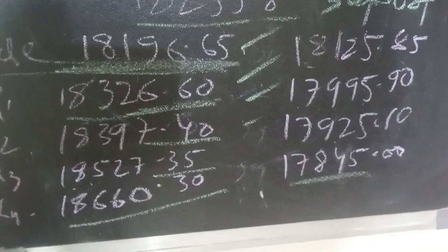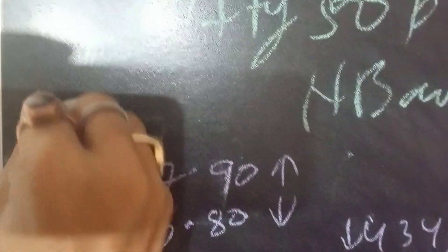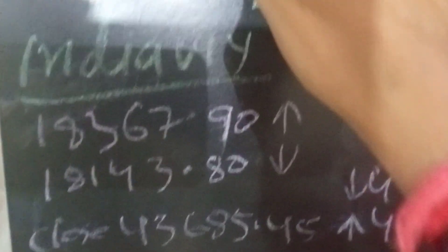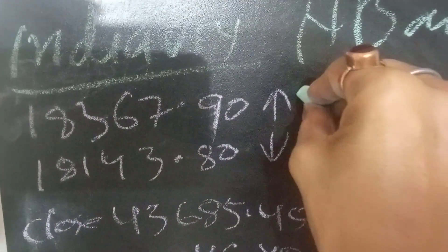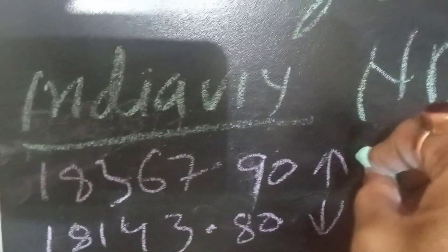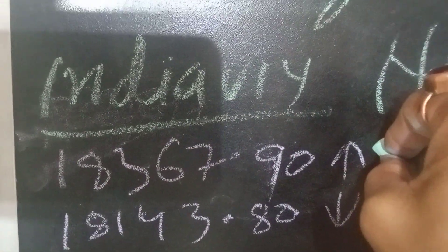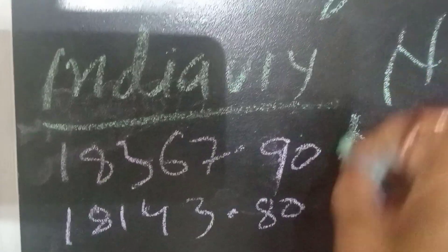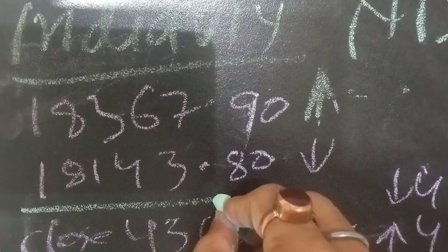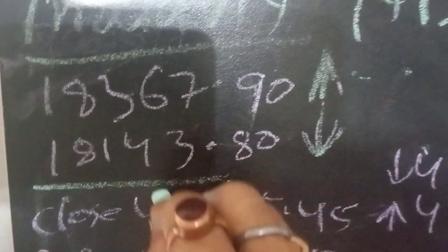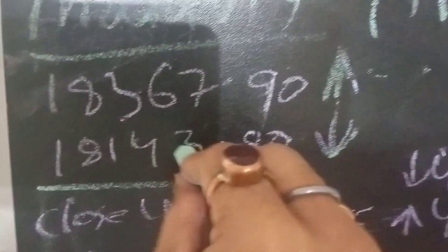Now we have to go to India VIX. The top range is 18,366 and the lower side is 18,143. This means 18,143 to 18,366 is the range. Now let's talk about Nifty Bank.